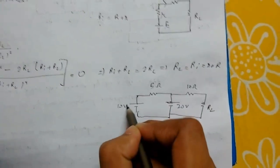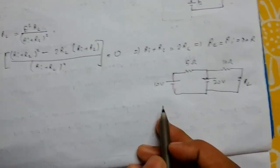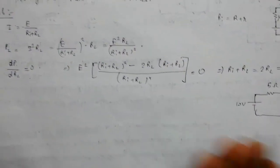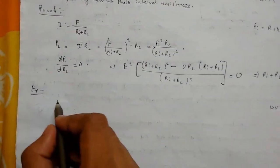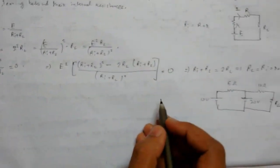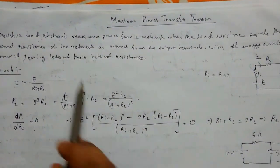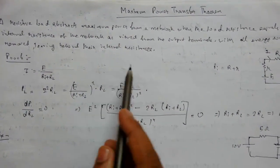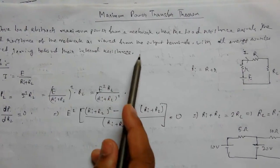We need to find the value of RL for which the circuit will draw maximum power, and also find the maximum power. What we've learned is that we first need to remove all the sources and replace by their internal resistances, and view it from the output